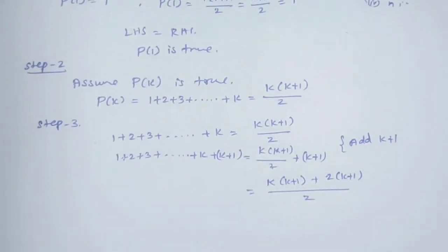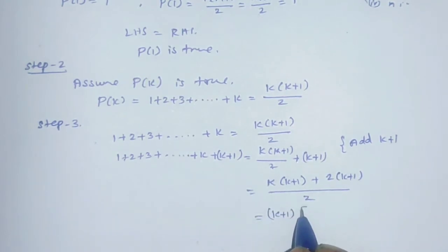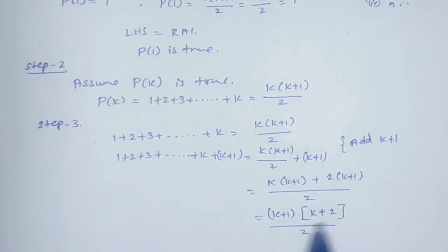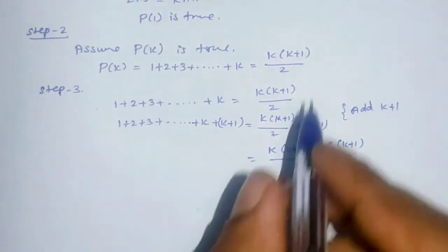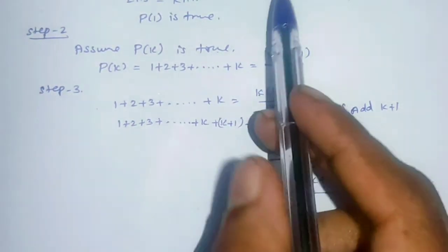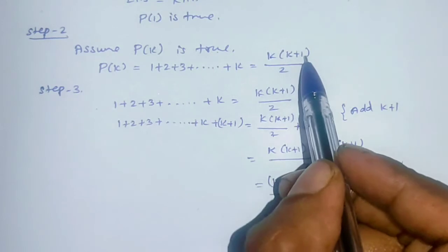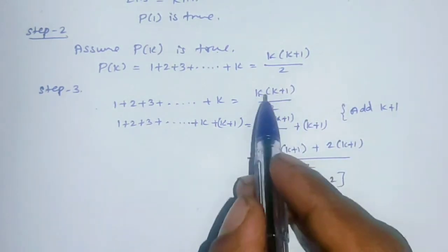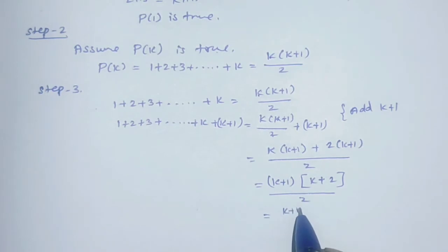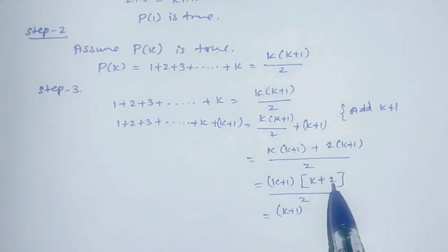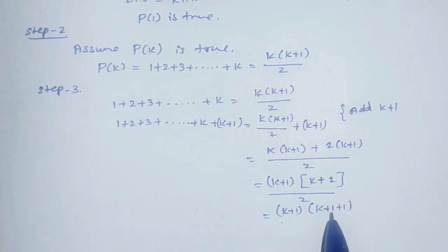We factor out (k+1) from the numerator: [k(k+1) + 2(k+1)] / 2 = (k+1)(k+2) / 2. This is the required form for P(k+1), where the new term is (k+1) and the existing structure gives (k+1)(k+2)/2. Therefore P(k+1) is true.